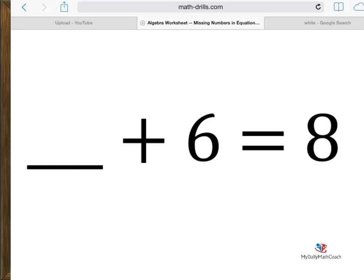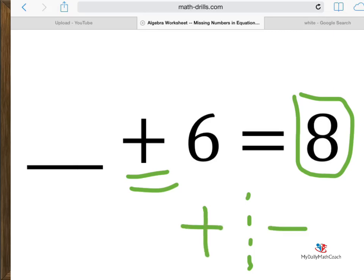since you have some number plus 6 equals 8, here's what you can do. You can take the number that is your answer. In this case, the 8. And since we're doing addition, we can do the opposite operation. So the opposite of addition is subtraction.